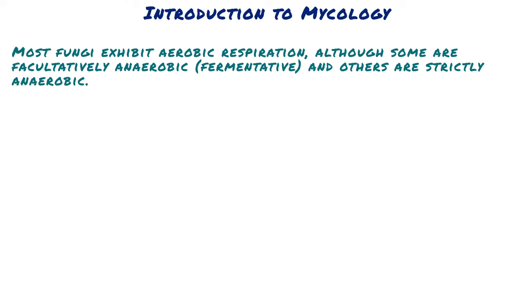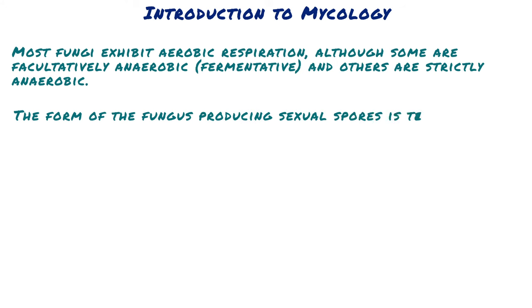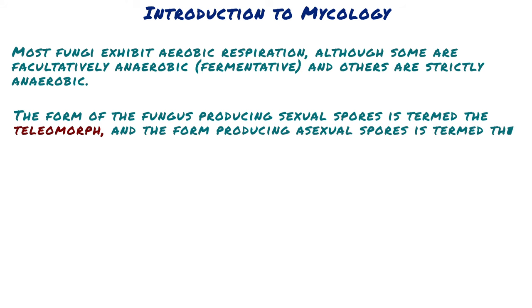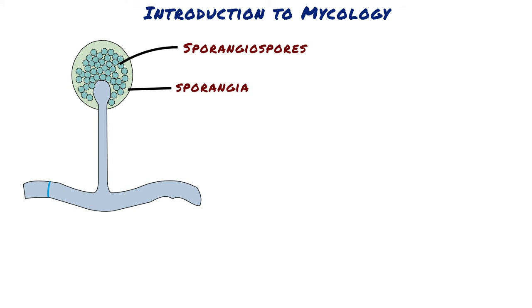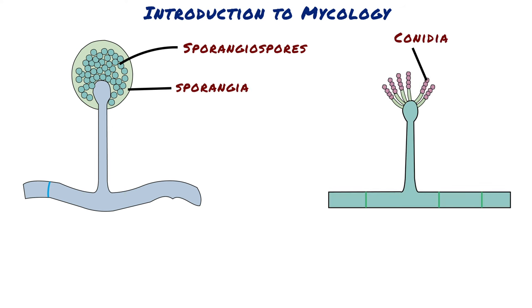Fungi reproduce by formation of spores that may be sexual or asexual. The form of the fungus producing sexual spores is termed the teleomorph, and the form producing asexual spores is termed the anamorph. Asexual spores consist of two general types: sporangiospores and conidia. Sporangiospores are asexual spores produced in a containing structure or sporangia. Conidia are asexual spores that are born naked on specialised structures.